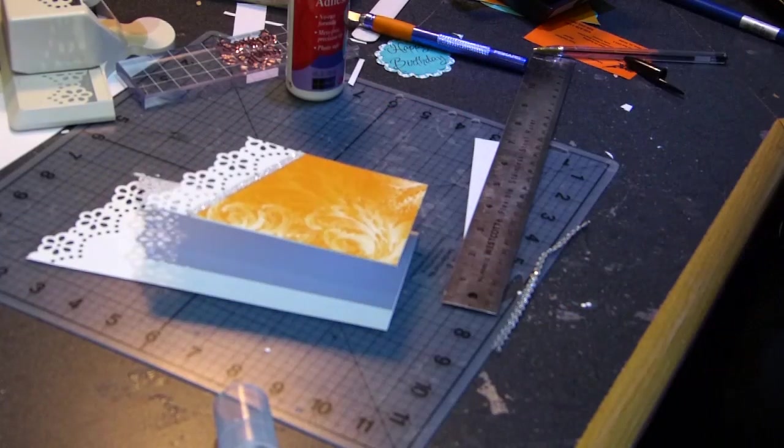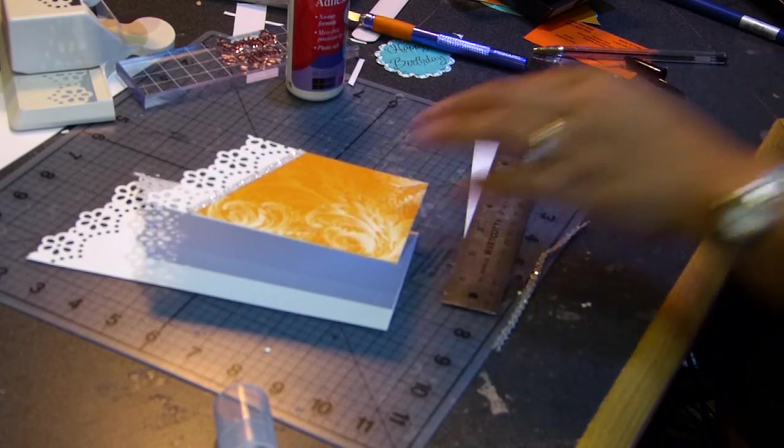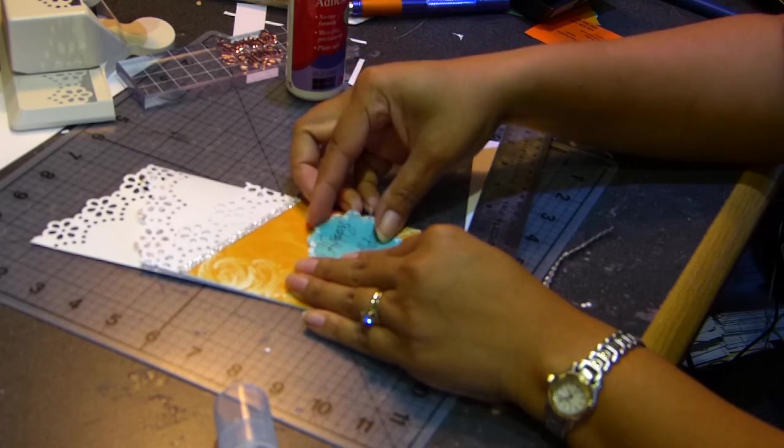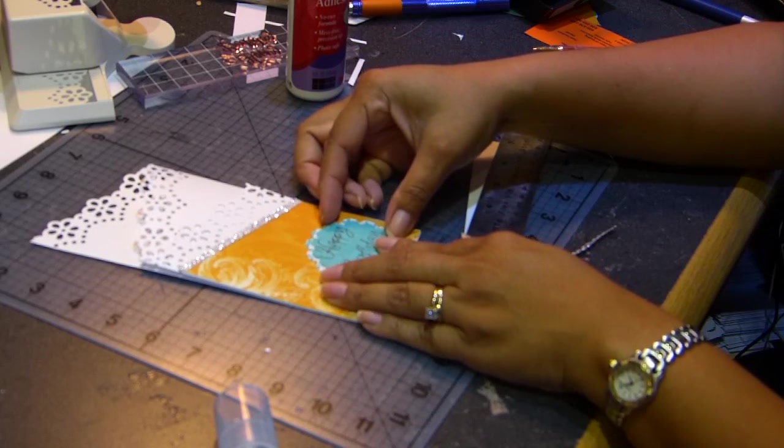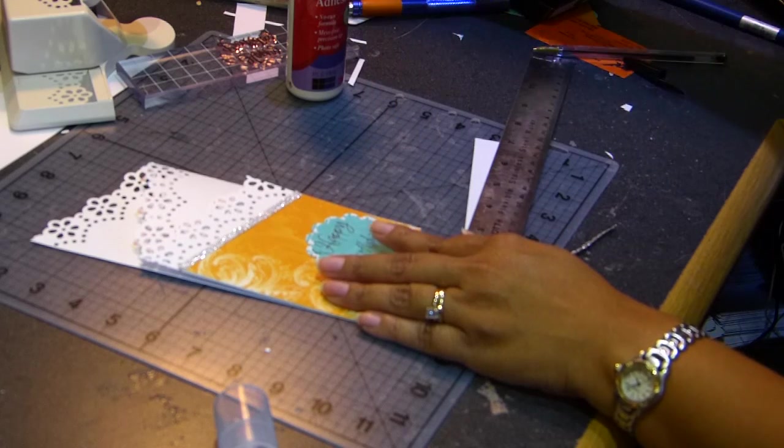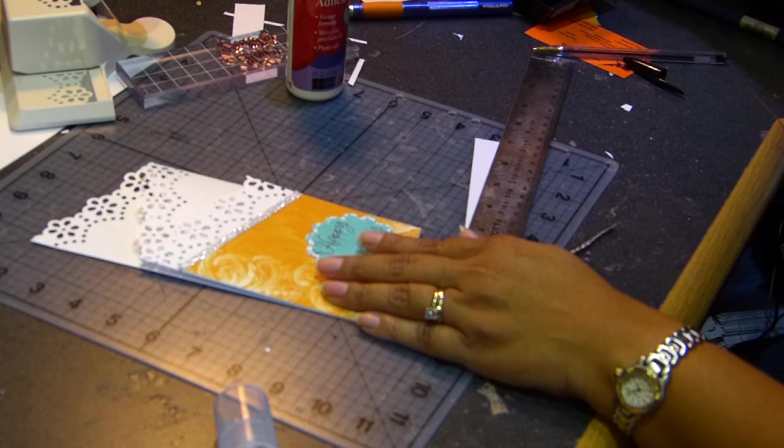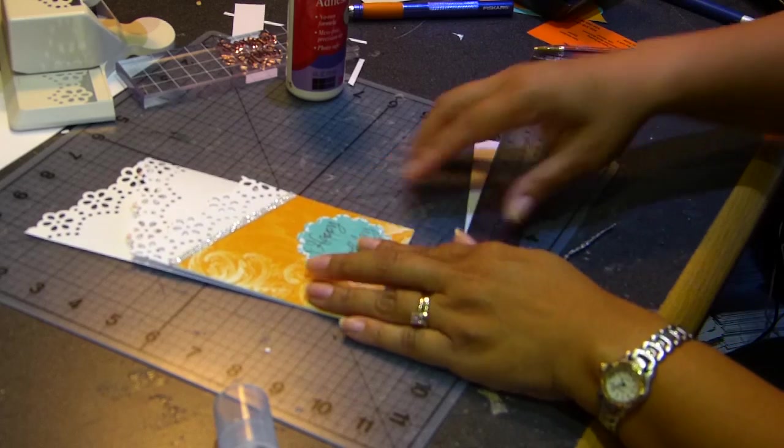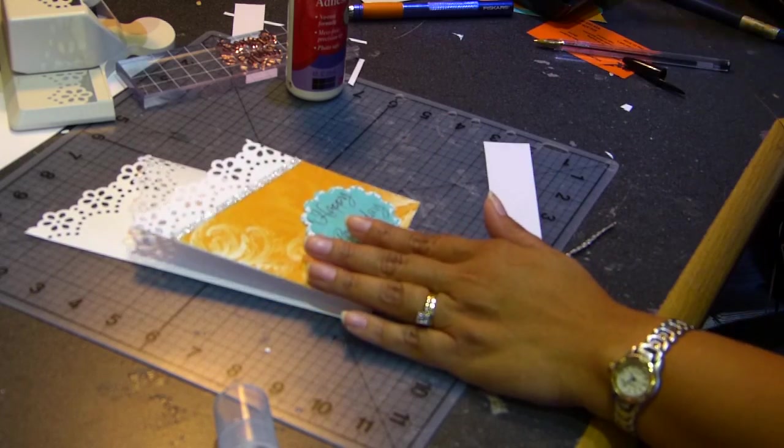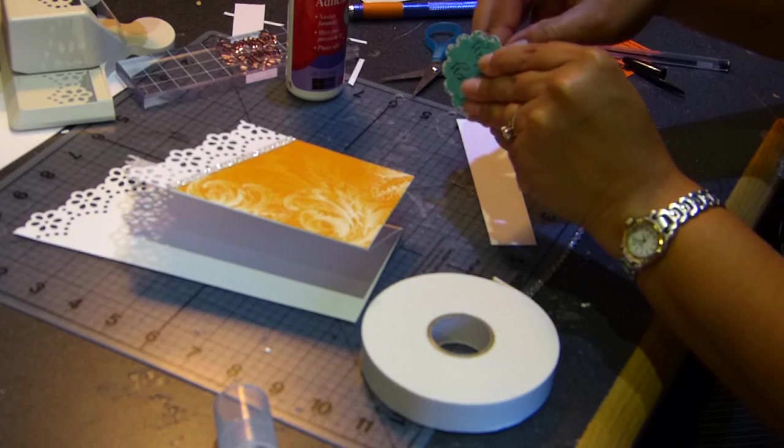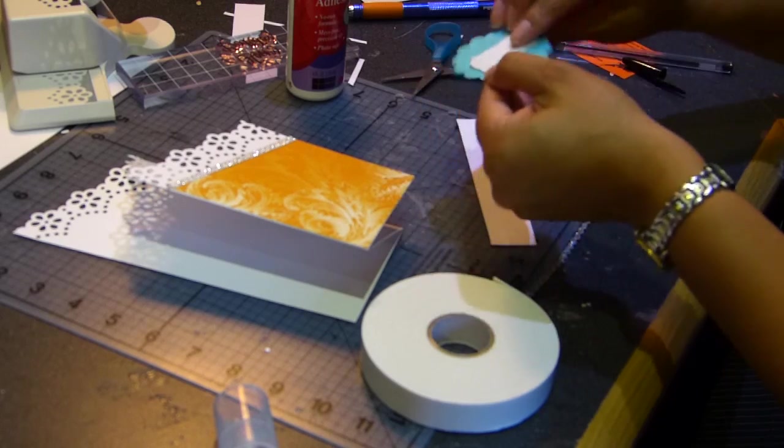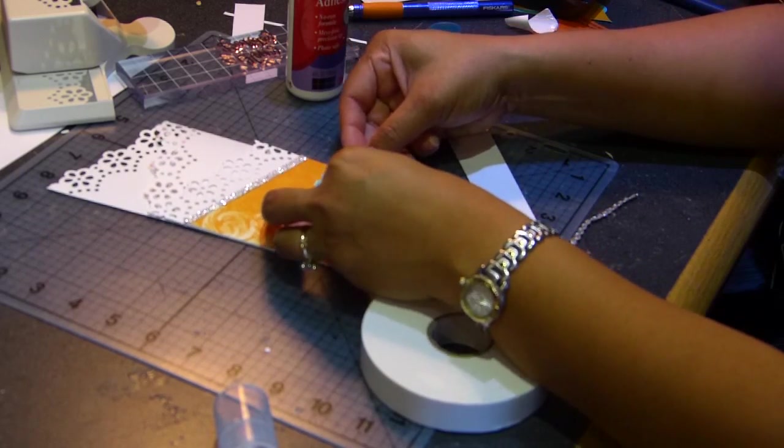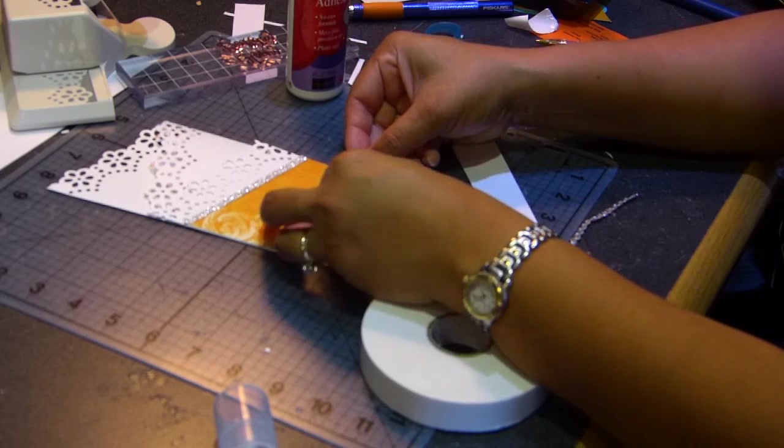And now what I'm gonna do is I'm gonna mount the happy birthday on the corner here. I'm gonna put some foam tape. That's my dog barking in the background. Okay so we're gonna go here happy birthday.